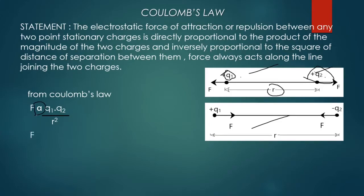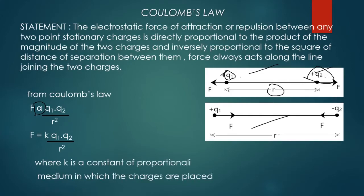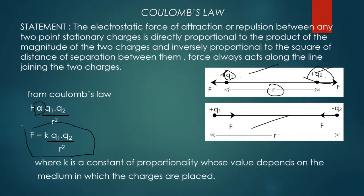From Coulomb's law, force is directly proportional to q1·q2 and inversely proportional to r². Using the proportionality constant k, the formula becomes: F = k·q1·q2 / r², where k is a constant of proportionality whose value depends on the medium in which the charges are placed — the medium can be air, vacuum, water, glass, or anything.